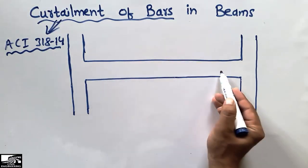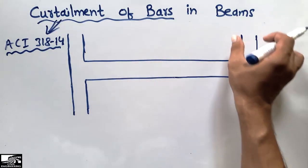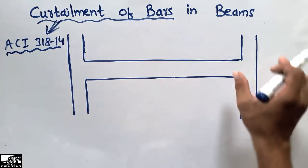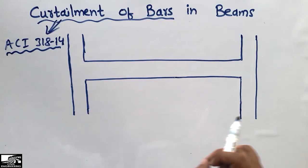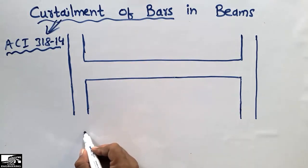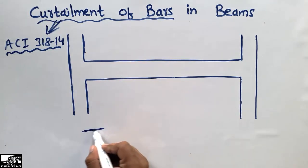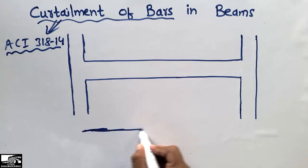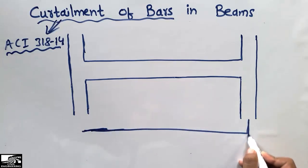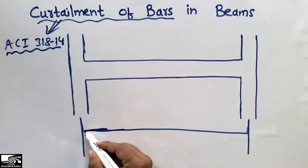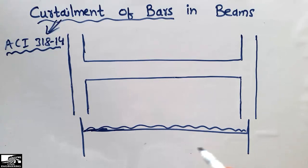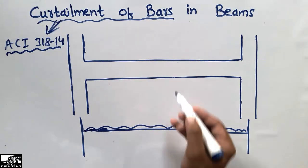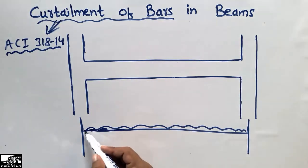Let's consider this beam — a horizontal flexural member with two vertical members, the columns, at both ends. Upon loading, if I draw the line view of this beam, this is the beam under a uniformly distributed load coming from the slab or from the beam above.